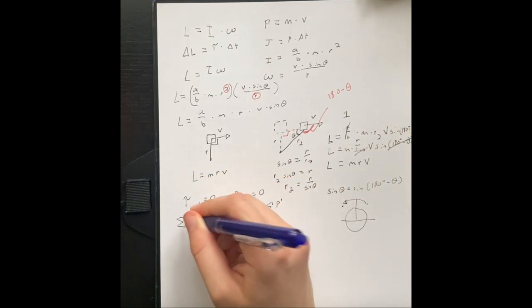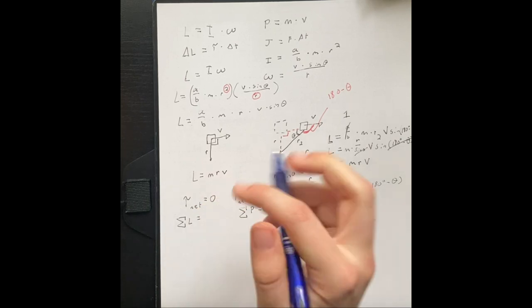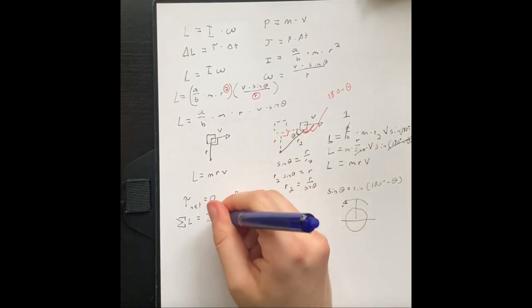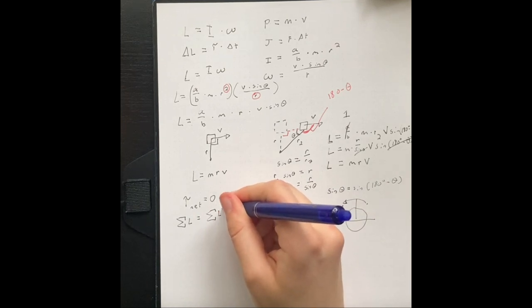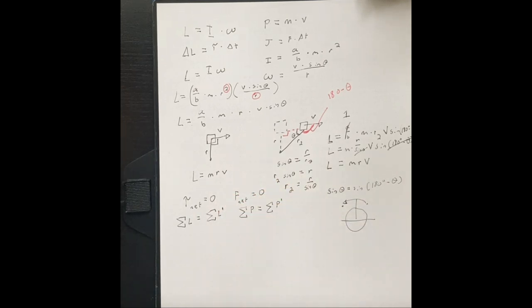And so now we can apply the same rule to our angular version of this. All of the angular momentum on one side, or one moment before a certain event, is going to be equal to all of the angular momentum after another, or in the moment after. So that's pretty interesting. And you can use that to solve.